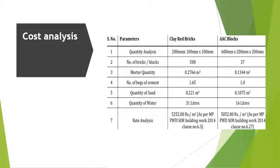Cost analysis of AAC block versus clay red bricks — quantity analysis: The size of one clay brick is 200mm x 100mm x 100mm and the size of one AAC block is 600mm x 200mm x 200mm. For 1 cubic meter, 500 red clay bricks are required versus 37 AAC blocks. Mortar quantity is 0.2766 m³ for clay bricks and 0.1344 m³ for AAC blocks. Cement required: 1.65 bags for clay bricks and 1 bag for AAC blocks.